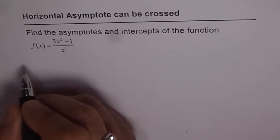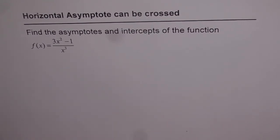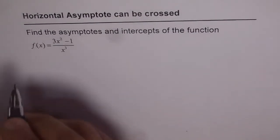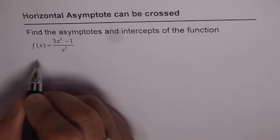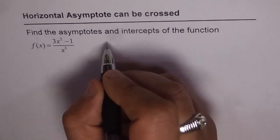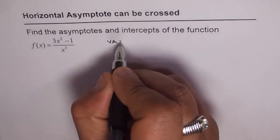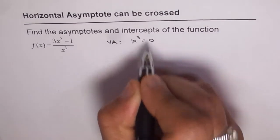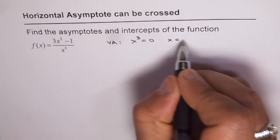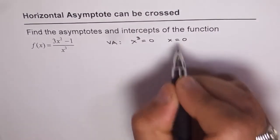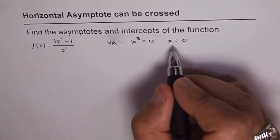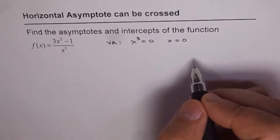How do you find the vertical asymptote? To find the vertical asymptote, equate the denominator to 0. So let's first find the vertical asymptote for this. Vertical asymptote: x³ = 0, which means x = 0. So at x = 0, we have a vertical asymptote, and that is the equation of our line.